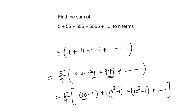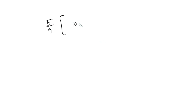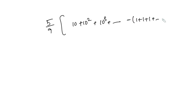Here the first parts — 10, 10 squared, 10 cubed, and so on — form a GP. The negative 1 terms will be added n times. So we have 5 over 9 times the quantity: 10 plus 10 squared plus 10 cubed and so on for n terms, minus 1 plus 1 plus 1 and so on for n terms.